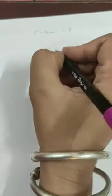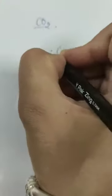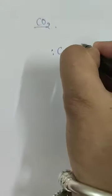Let us take the example of CO₂. Oxygen has 2 electrons in its outer shell and carbon has 4. We put carbon in the center. Carbon has 4 electrons and each oxygen has 2 electrons. Carbon shares 2 electrons with each oxygen, forming double bonds on both sides to complete their octets.